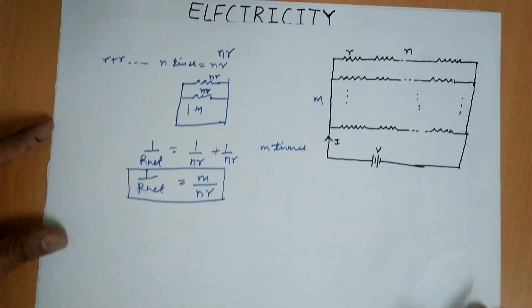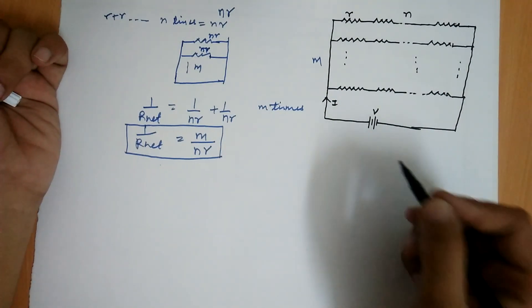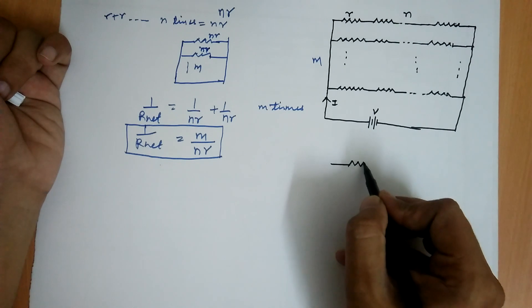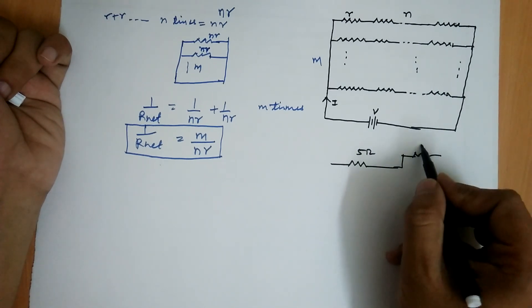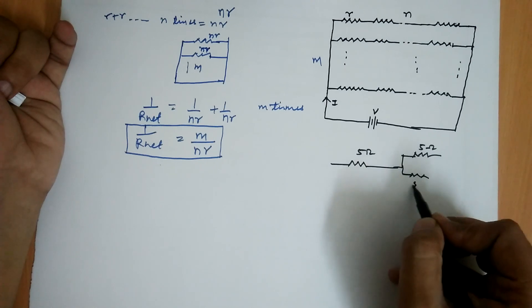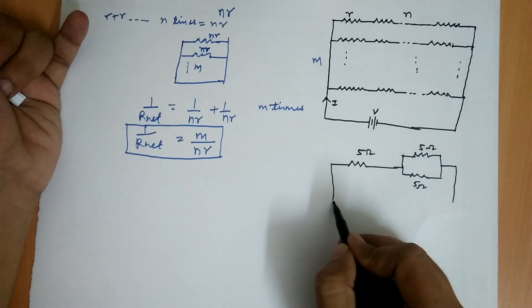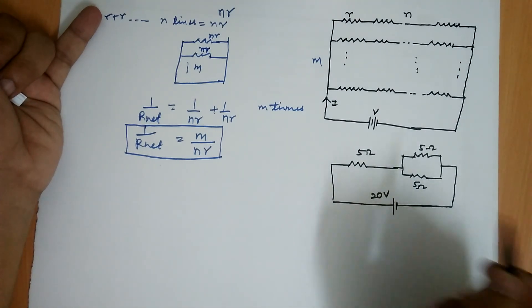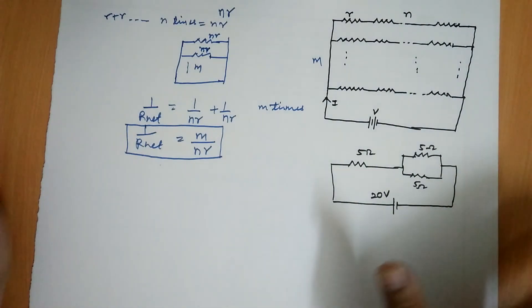Now let us solve a numerical problem. A resistance of 5 ohm is connected with two resistances of 5 ohm each which are in parallel — I am drawing the diagram, but sometimes the statement is given directly — and it is connected with a battery source of 20 volts. Find the current through the circuit.